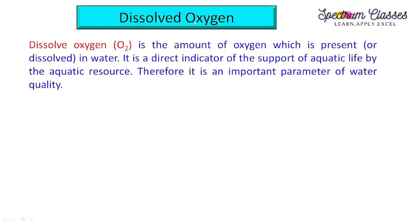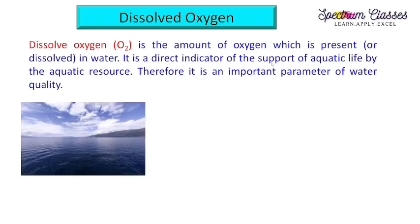What is dissolved oxygen? Dissolved oxygen is the amount of oxygen which is present or dissolved in water. It is a direct indicator of the support of aquatic life by the aquatic resource. Therefore, it is an important parameter of water quality.